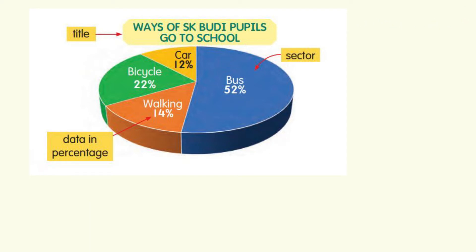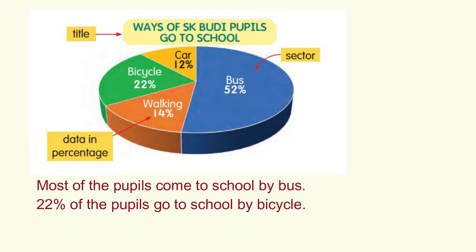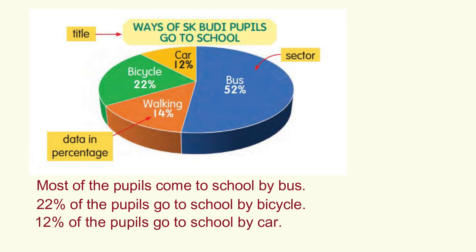From this pie chart, the bigger sector is bus, so we can say that most of the pupils come to school by bus. 22% of the pupils go to school by bicycle, 12% of the pupils go to school by car, and 14% of the pupils walk to school.